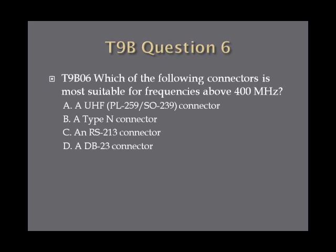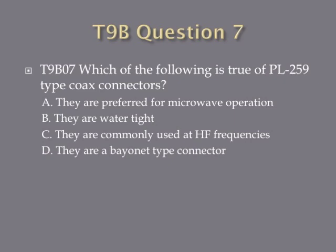Question 5. What generally happens as the frequency of a signal passing through coaxial cable is increased? A. The apparent SWR increases. B. The reflected power increases. C. The characteristic impedance increases. Or D. The loss increases. Question 6. Which of the following connectors is most suitable for frequencies above 400 MHz? A. A UHF PL259/SO239 connector. B. A type N connector. C. An RS213 connector. Or D. A DB23 connector. Question 7. Which of the following is true of PL259 type coax connectors? A. They are preferred for microwave operation. B. They are water tight. C. They are commonly used at HF frequencies. Or D. They are a bayonet type connector.